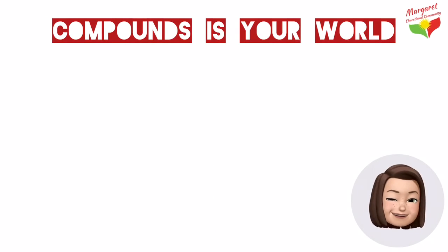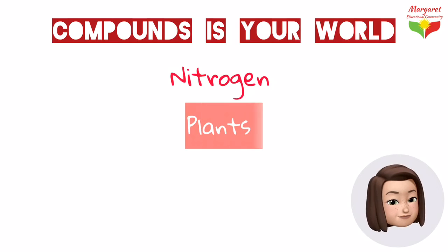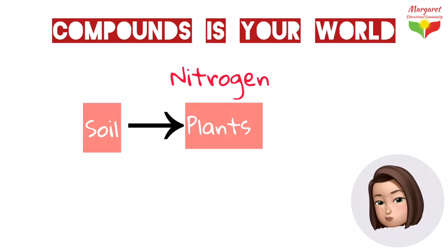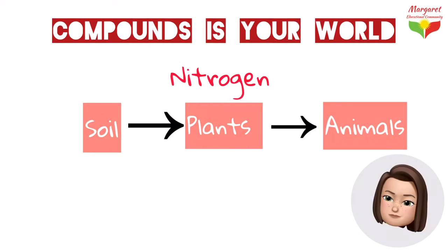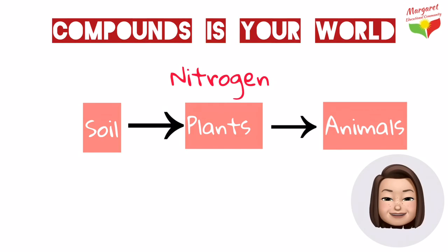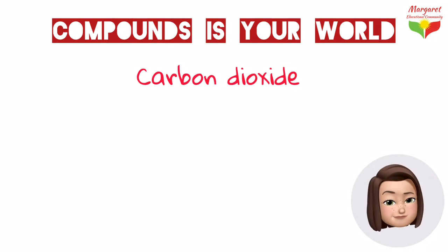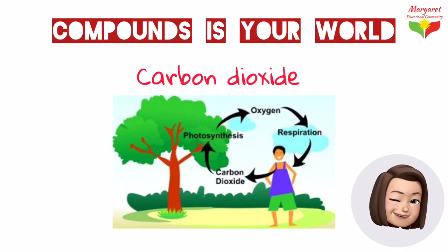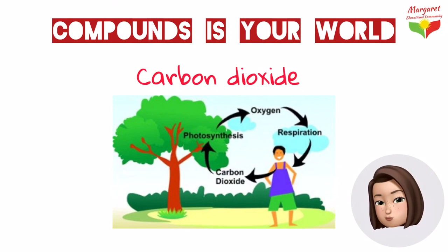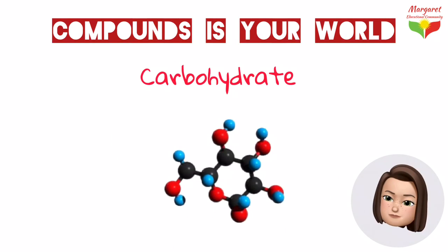Among the compounds found in nature, we have nitrogen compounds. Plants use nitrogen compounds found in soil. Animals get the nitrogen they need by eating plants, or by eating animals that have eaten plants. The proteins in food are broken down as animals digest the food, and the simple compounds that form are used by animal cells to make new proteins. Another compound that plays an important role in life is carbon dioxide, made in your body. Plants take in carbon dioxide, which is used in photosynthesis. In photosynthesis, plants make compounds called carbohydrates, which can then be broken down for energy through chemical changes by plants and animals.